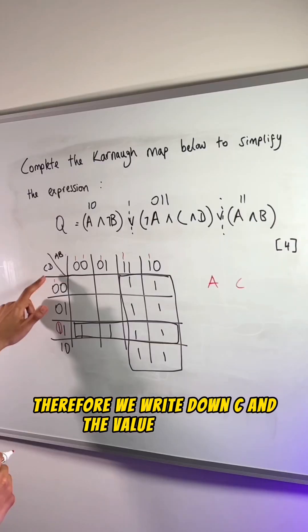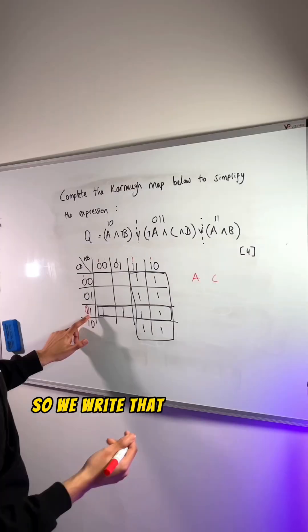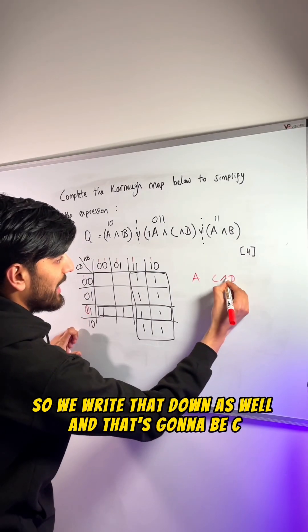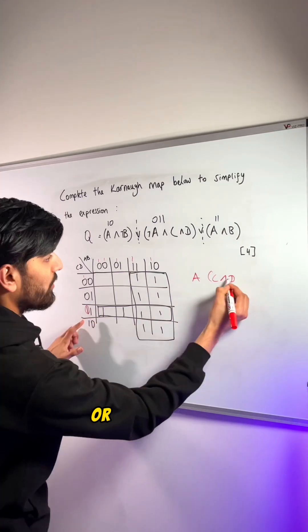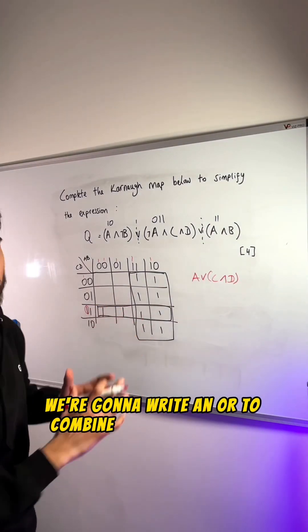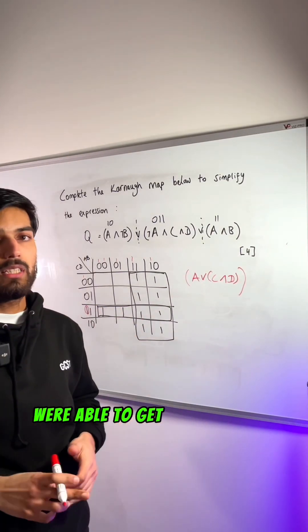Therefore, we write down C and the value for D is 1, so we write that down as well. And that's going to be C and D because it's part of the same group. For the first box, we're going to write an OR to combine both of the boxes. Were you able to get this correct?